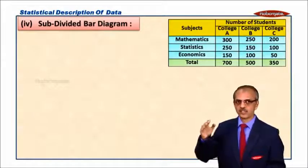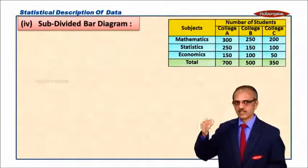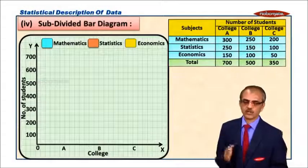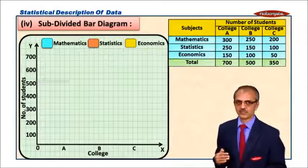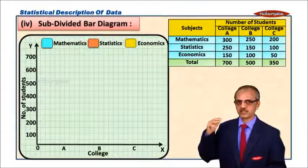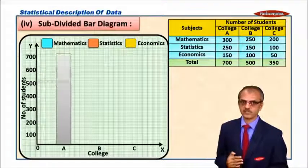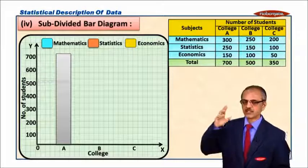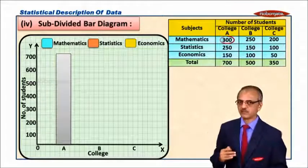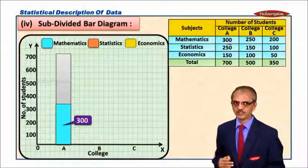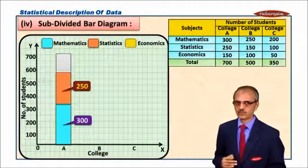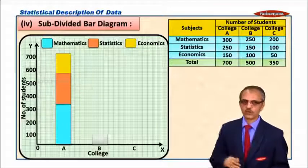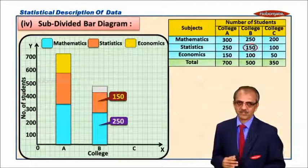We have been given college-wise and subject-wise students here. Now we are going to take college on the x-axis and on the y-axis the number of students in three subjects: maths, stats, and economics. First, for college A, 700 students are the total. For mathematics we have about 300 students, for stats 250 students, and for economics about 150 students. And so on for college B the same.